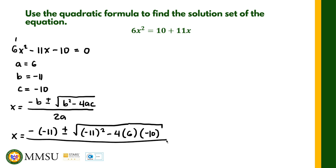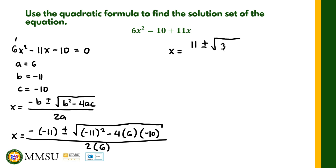All over 2 times 6. Simplifying, the negative of negative 11 is positive 11, plus or minus the square root of — 11 squared is 121, and negative 4 times 6 times negative 10 gives us a total under the radical of 361. So that's the square root of 361, all over 2 times 6, which is 12.